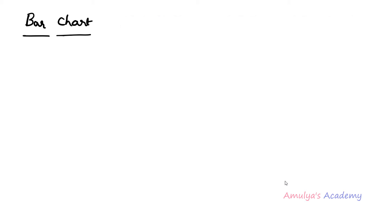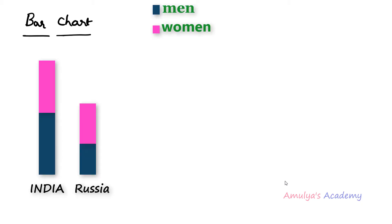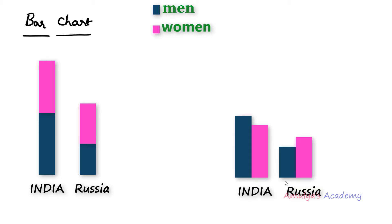Let me show you an example. If I want to represent the male and female population of different countries using a bar graph, I can represent that using a stacked bar graph where the bars are placed one above another. We can represent the same data using a multiple bar graph where the bars are placed next to each other instead.